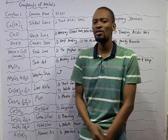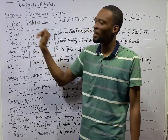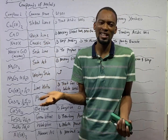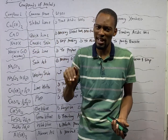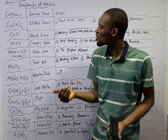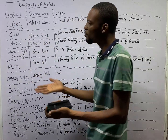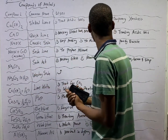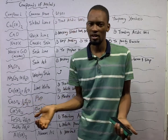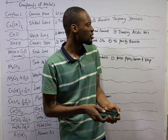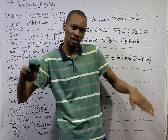The second compound of metal you should know is quicklime, or you can say lime. Quicklime is calcium oxide, CaO. Calcium oxide is used for making slaked lime, it is used for making mortar and cement, and it is used to treat acidic soil. When you have acidic soil, you add bases to the soil — it will therefore neutralize.